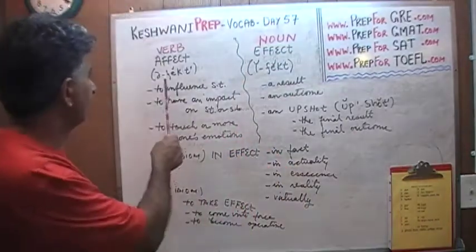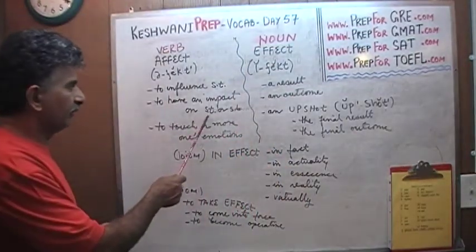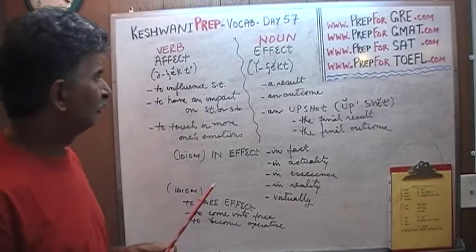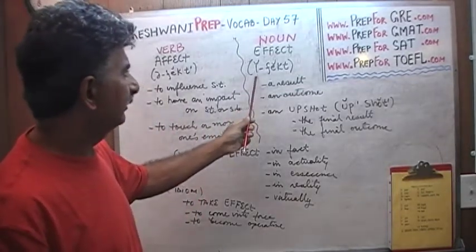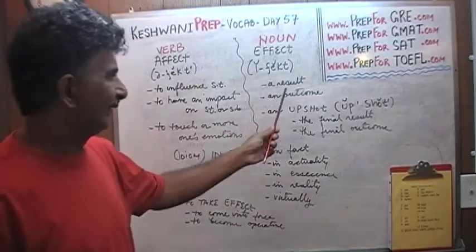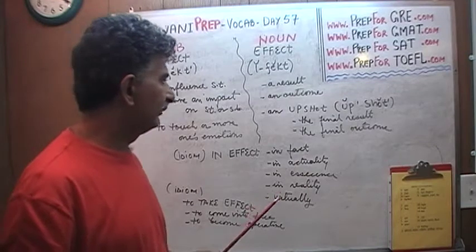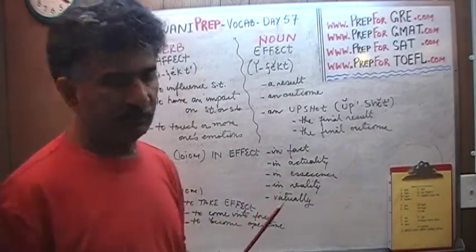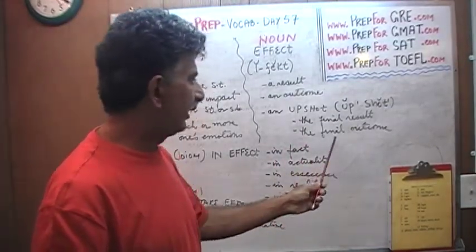That's what it means to be affected by something — to have an impact on something or somebody, to influence somebody. As opposed to effect, which is a noun. An effect is a result, an outcome of something, a result of something. It's an upshot. An upshot is the final outcome, the final result.